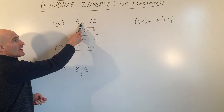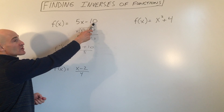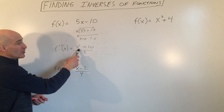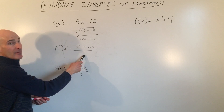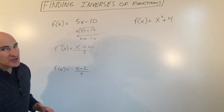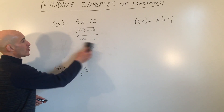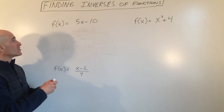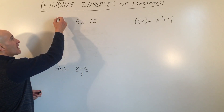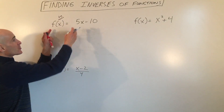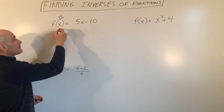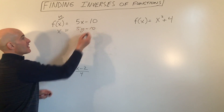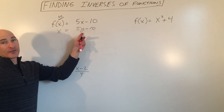Instead of multiplying by 5 first and then subtracting 10, you reverse it: add 10 to x and then divide by 5. But what most teachers teach and most books show is a simple process. All you're going to do is think of f of x as y, switch the x and the y, and solve for the new y.